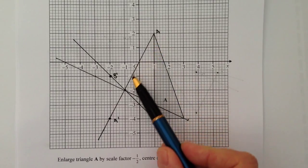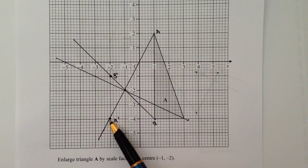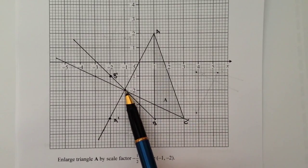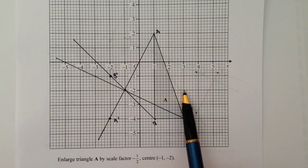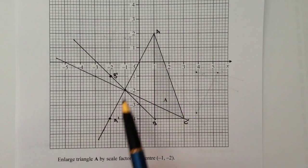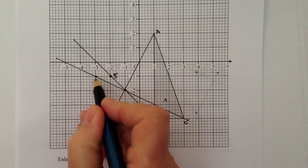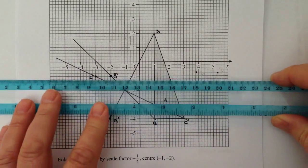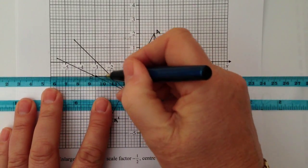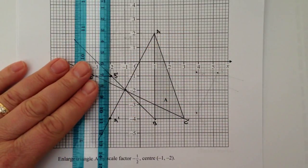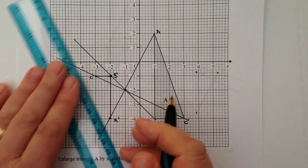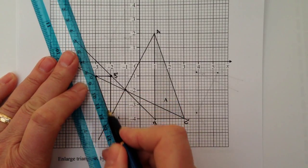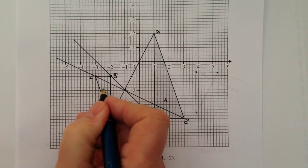Similarly with A along this line of enlargement to A'. The last point is C. In this case, I've gone along 4 and then down 2. So I'm going to go along 2 and up 1 because it's a scale factor of a half. That will take me to this point here, which is going to be C'. Then it's just a case of joining up those particular dots, which will give me my new shape. I need to label this particular triangle B in order to get all my marks for this question.